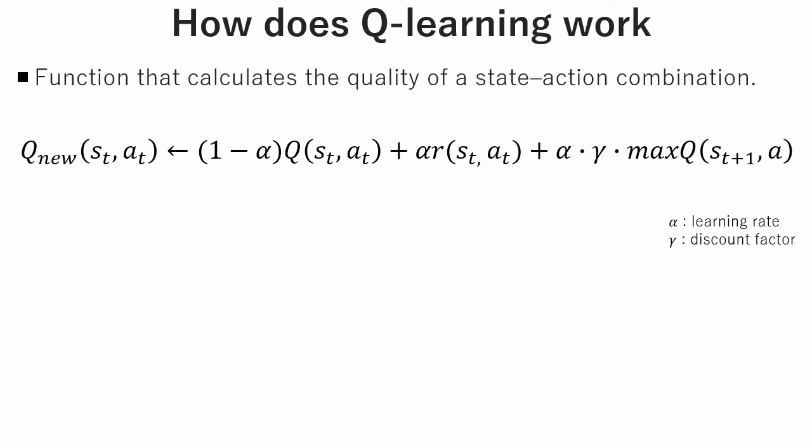This is the function that calculates quality of a state-action combination. Here is the meaning of each term. The first term represents how fast does q change.